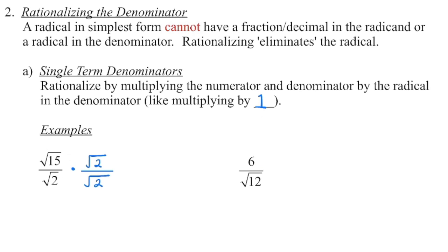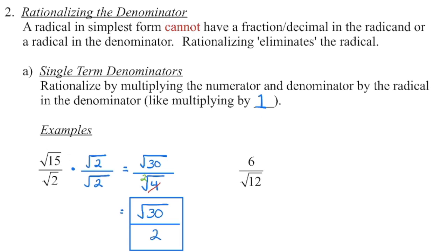Because we're trying to get rid of the square root of 2, if we multiply by the square root of 2, that gives us a perfect square in the denominator and eliminates the radical. But we must multiply by 1 — that is, the square root of 2 over the square root of 2. Multiplying the numerators: 15 times 2 is 30. Multiplying the denominators: 2 times 2 is 4, a perfect square. The square root of 4 is 2, giving us the square root of 30 divided by 2. No perfect squares remain, no fractions, no radical in the denominator.